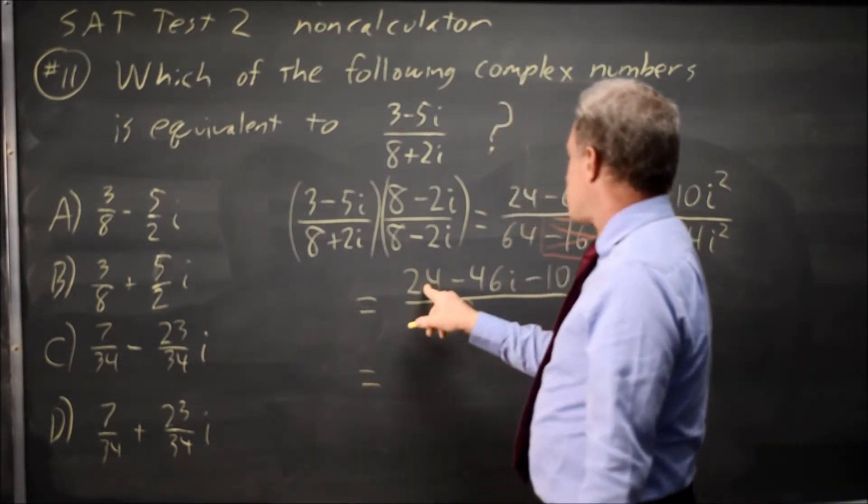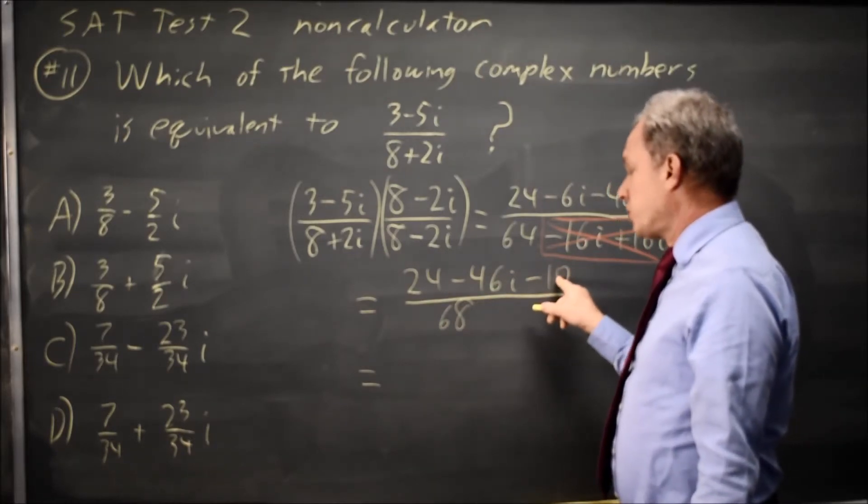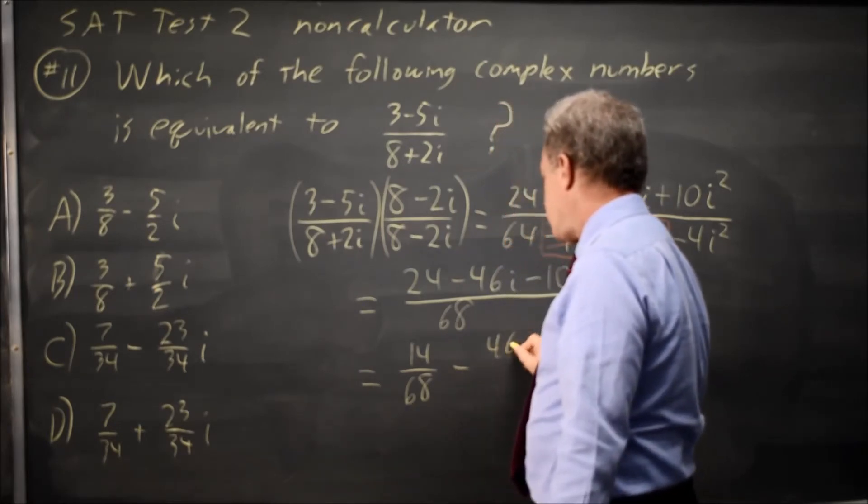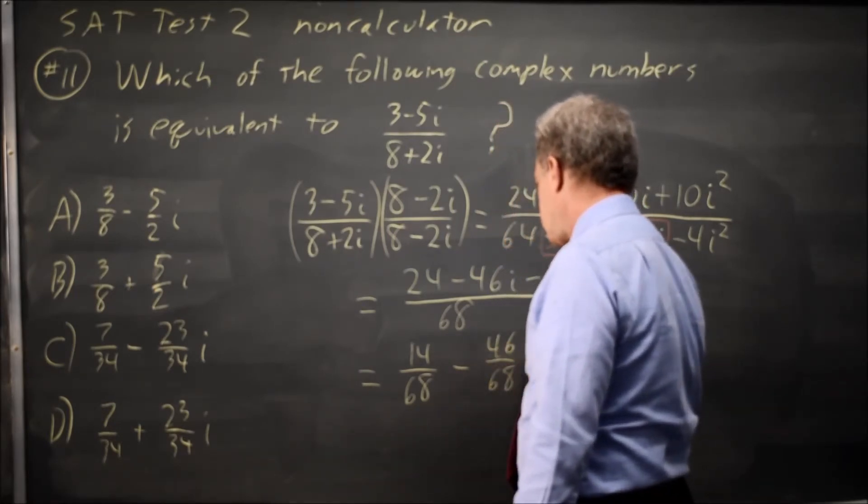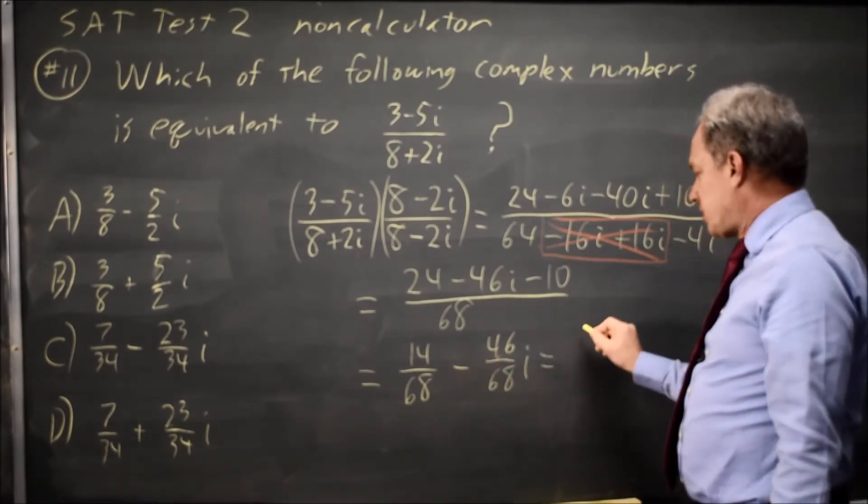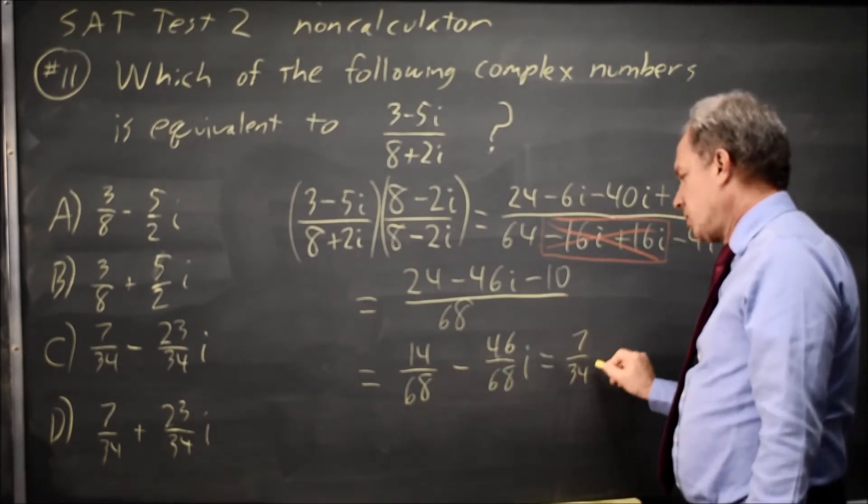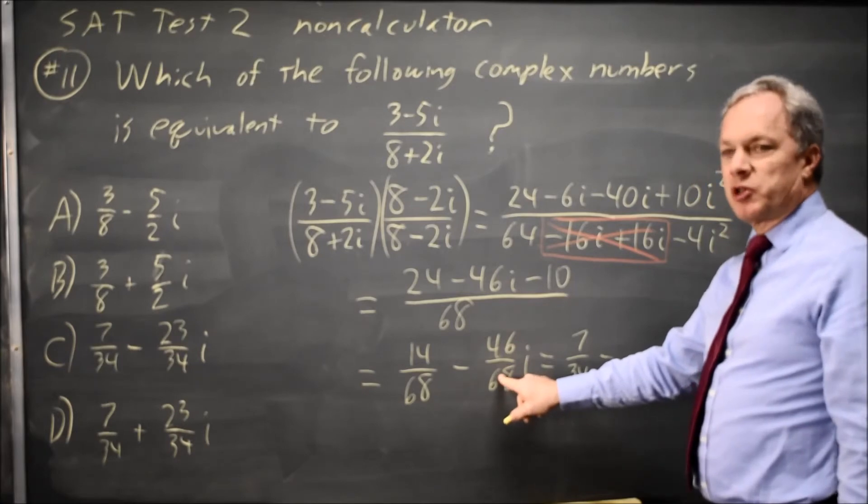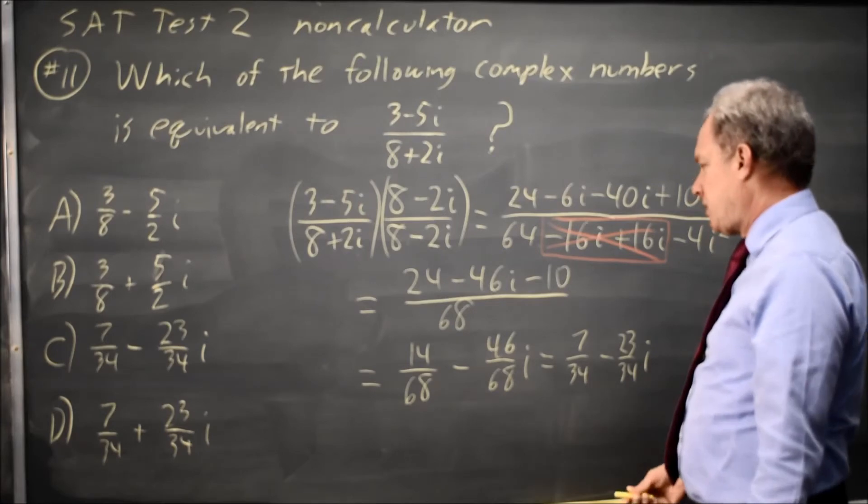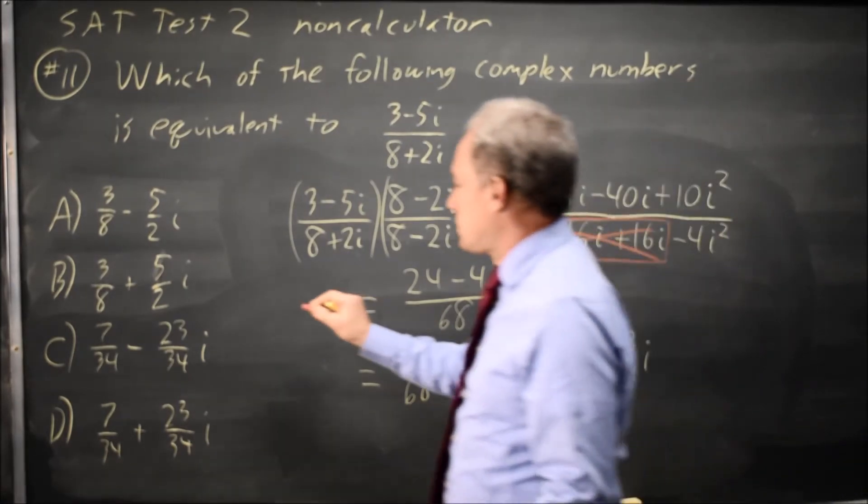So that simplifies to 24 minus 10 is 14 over 68, and then minus 46 over 68 times i. 14 and 68 are both even, so that is 7 over 34. 46 and 68 are both even, so that's 23 over 34 times i, and that matches choice C.